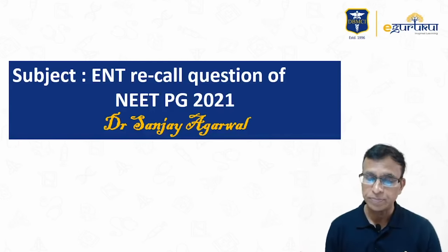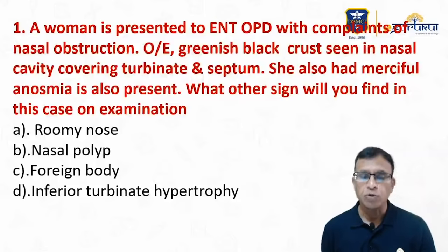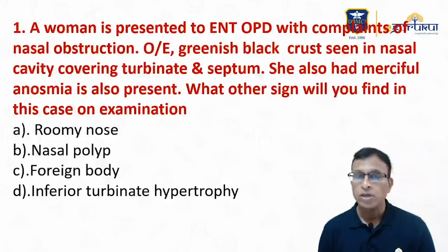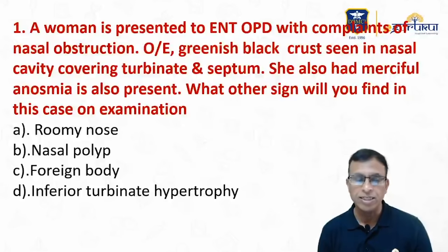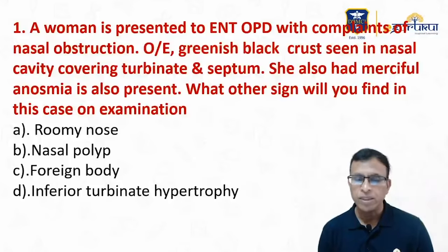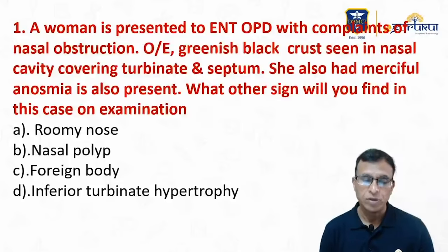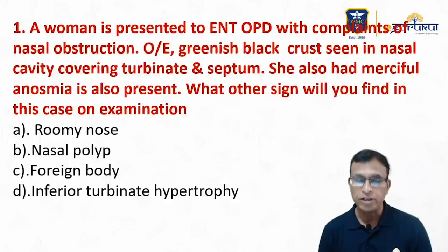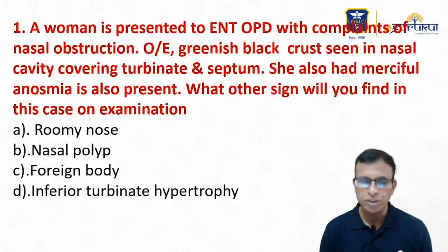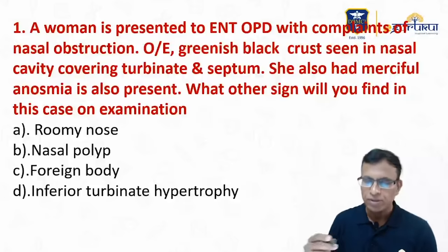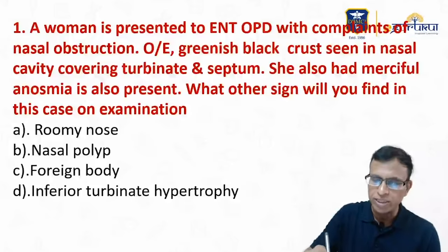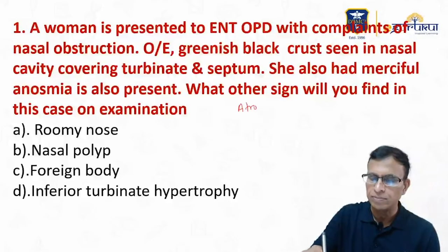First question: a woman presented to the ENT outpatient with complaints of nasal obstruction. On examination, greenish-black crust is seen in the nasal cavity covering turbinates and septum. She also had merciful anosmia. What are the other signs you'll find on examination? The options are: roomy cavity, nasal polyp, foreign body, inferior turbinate hypertrophy. This is a very popular topic — I'm sure everybody knows this is atrophic rhinitis.